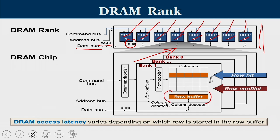Each row buffer can be independently manipulated, but since all row buffers are connected to one data bus, we have to be careful about signal generation for entry into the data buffer. DRAM access latency varies depending on which row is stored in the row buffer. If a request is for row 20 and row 20 is already in the row buffer, it can be serviced very fast. But if the row buffer contains row 30, then row 30 has to be written back before row 20 is brought in, taking more time depending on whether it is a row hit or not.